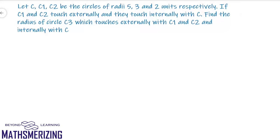This question says there are three circles: C, C1, and C2, with radii of 5, 3, and 2 units respectively. If C1 and C2 touch externally, we have two circles which touch each other externally. Then there is another circle C which touches the given circles internally.